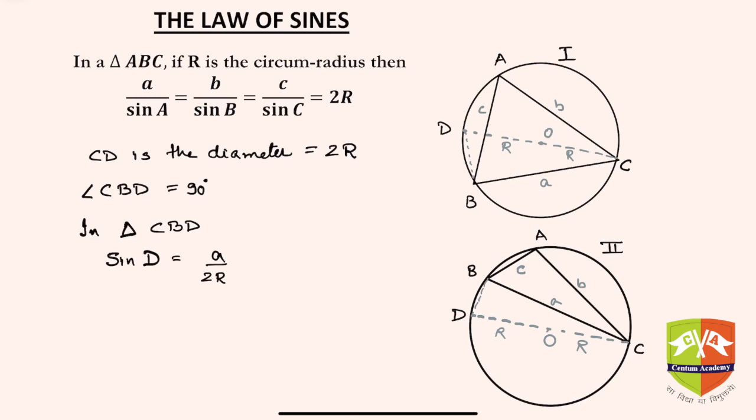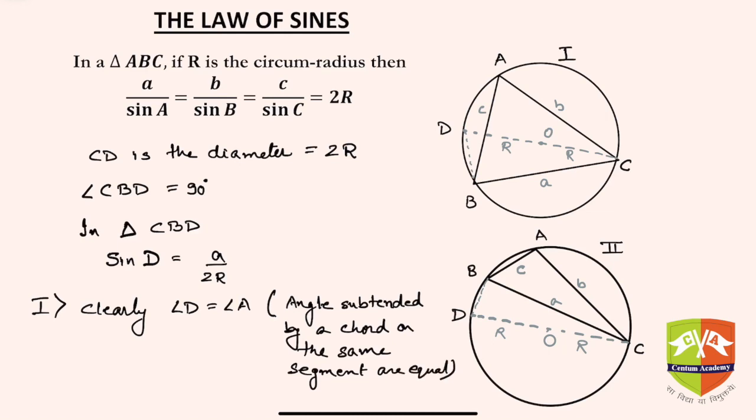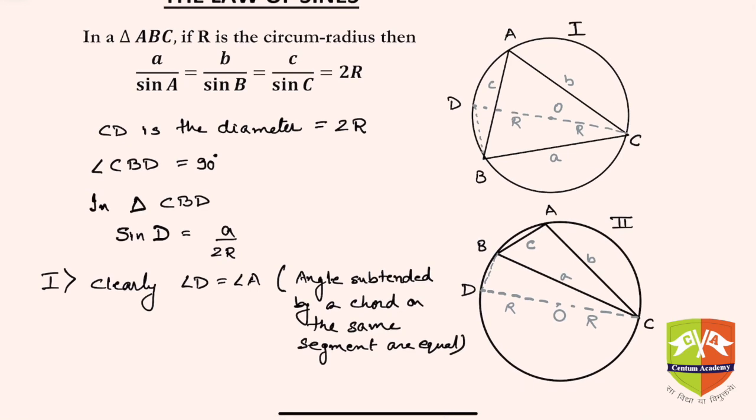And clearly, angle D is equal to angle A in case one. Why? Because the angle subtended by a chord on the same segment are equal. We know that. Clearly angle D is equal to angle A, and hence in this case sine D will be equal to sine A.